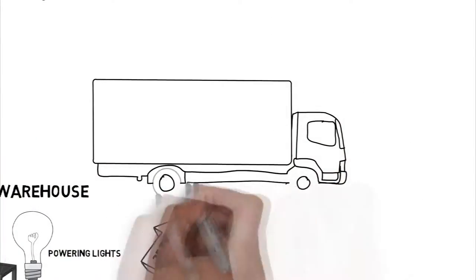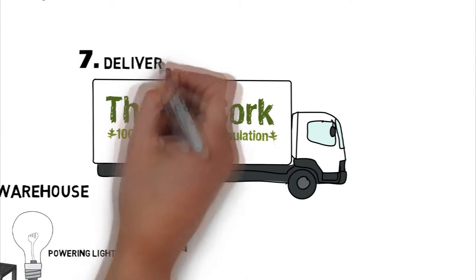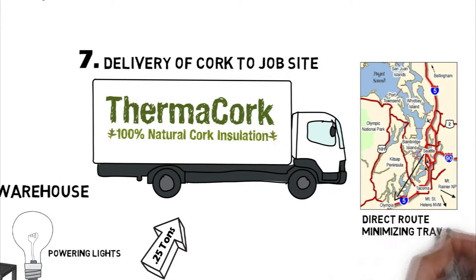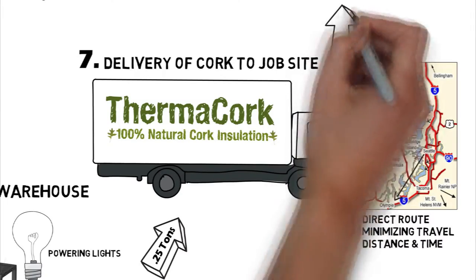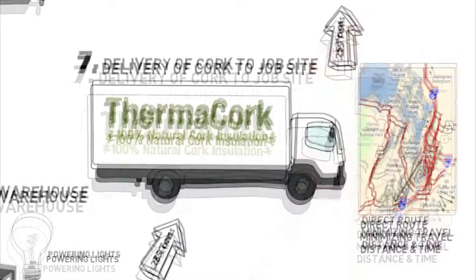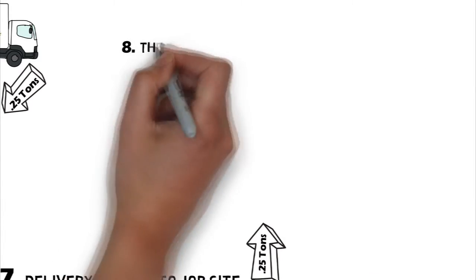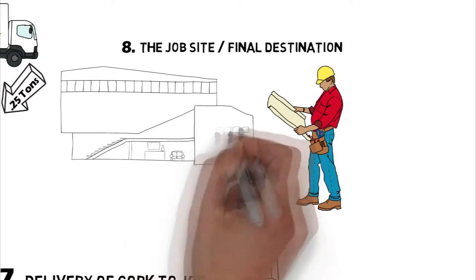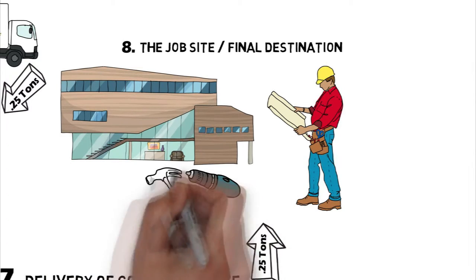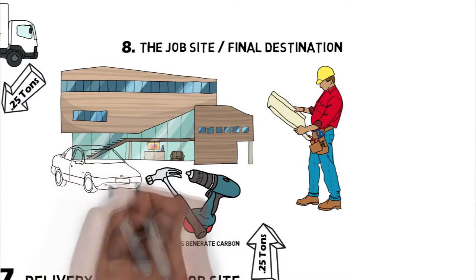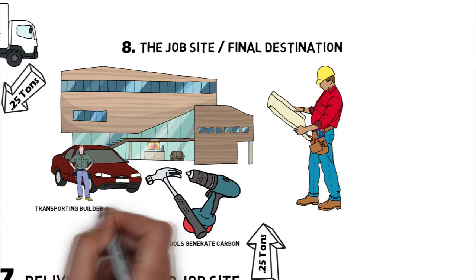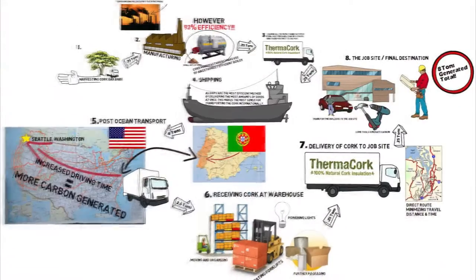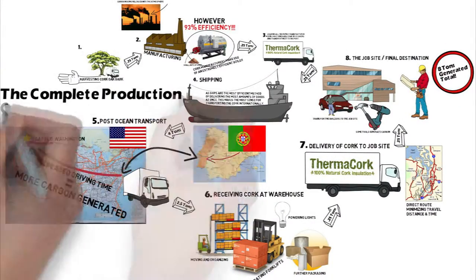After the cork has been sold to a contractor or builder, it's back on the road again — this time with a direct route, minimizing travel distance and time, thus reducing carbon emissions. Let's mark it down as 0.25 tons. The last stop is the job site, once it's been received by the builder or contractor. During construction, some tools used generate carbon emissions, as well as carbon from transporting builders to the job site. So there we have it — the complete production cycle of natural cork.